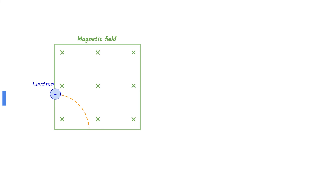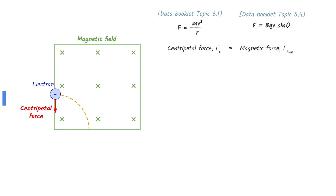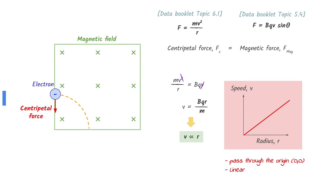The path of the electron inside the magnetic field is circular. This means that there is a centripetal force acting on the electron. There is a magnetic force on the electron since the movement of the electron is perpendicular to the magnetic field. The magnetic force on the electron acts as the centripetal force in this scenario. Use the equations given in the data booklet and simplify. Since B, Q, and M are constants, V and R will be directly proportional to each other. Therefore, the speed-radius graph would be linear and pass through the origin.